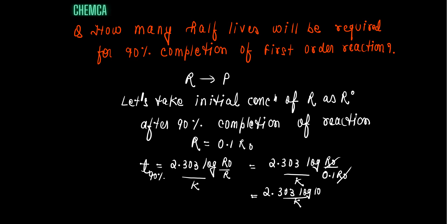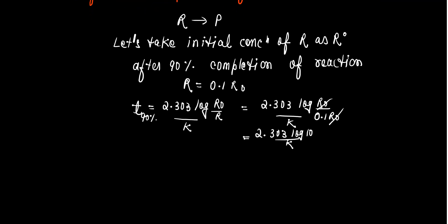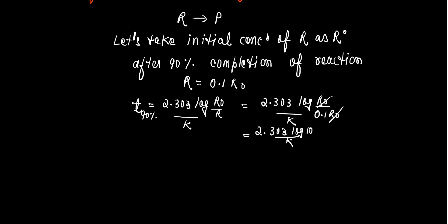This log 10 is equal to 1. Log will be equal to 1. So T 90% will get as 2.303 divided by K.